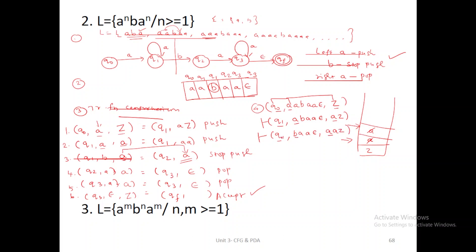Now: first value Q1, second value A, third value A — it is the second function, so you should stay in Q1 state. The remaining values are BAA epsilon; this A is pushed on the stack, so instead of single A, I am using 2A followed by Z. Q1BA is the third function — the output is Q2 state, remaining symbols are AA epsilon. Stop push operation means you don't do anything; whatever is available in the stack, just write as is. Now Q2AA is the fourth transition function — the output state is Q3. Pop means you pop this value, remaining values are AZ. Q3AA is also pop — only Z remains. The next input symbol is epsilon. Q3 epsilon Z will automatically go to accept state.